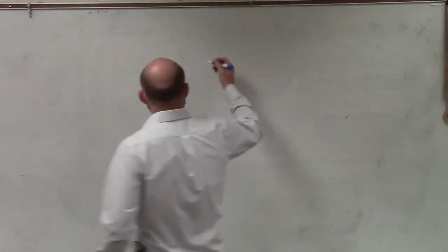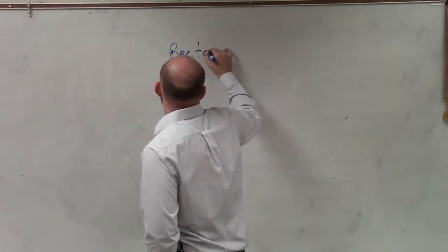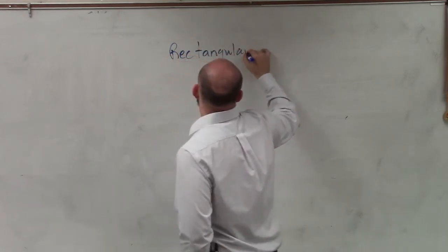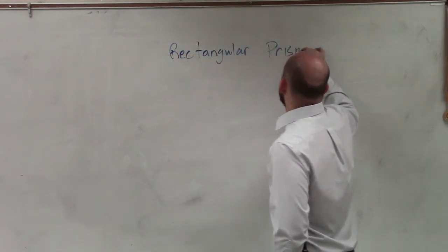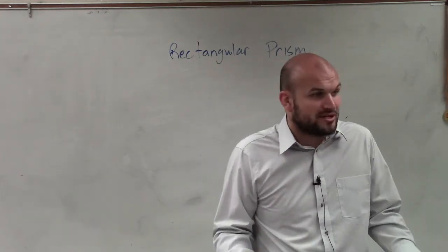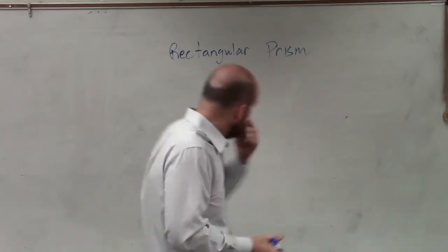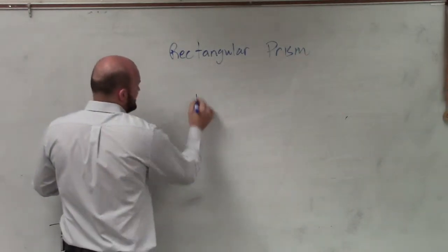So first of all, what we're going to be taking a look at is what is a rectangular prism. So to be able to find our surface area, the first thing we need to understand is what is a rectangular prism, or just really any kind of prism that we're going to be talking about.